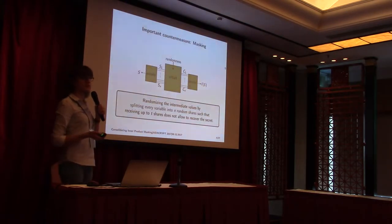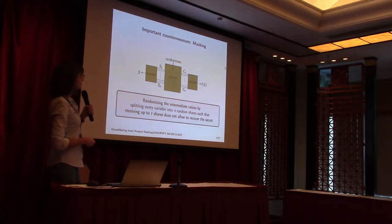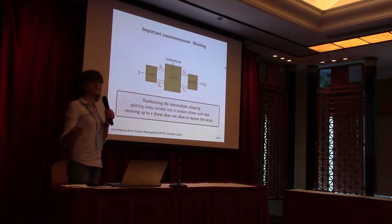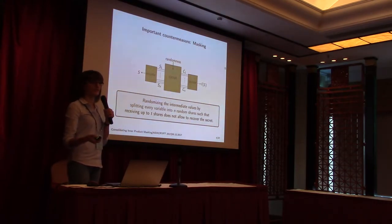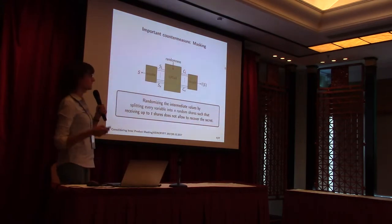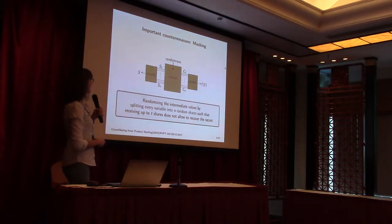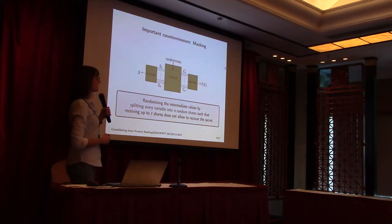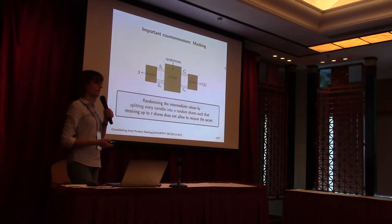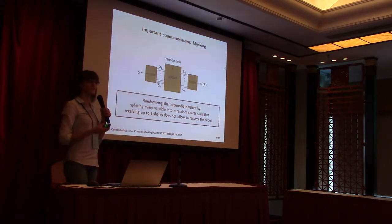An important countermeasure against side-channel attacks is masking. Masking means splitting every sensitive variable in the circuit into n random shares, such that if the attacker knows up to T of these random shares, he cannot recover entirely the secret. A circuit will look like this: we have an encoder which splits the secret S into shares S1 through SN, then the circuit with operations and nonlinear operations with randomness to hide the computation, and at the end a decoder which recomposes the output.